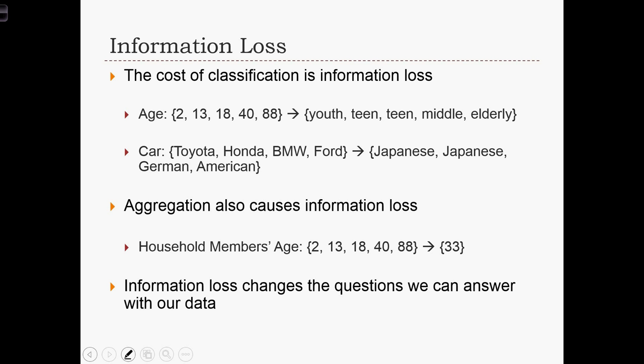When we classify our data, we are going to lose some information. For example, if our original data set consists of a sample of five people and their ages — 2, 13, 18, 40, and 88 — and we classify them by life cycle: under 13 as youth, 13 to 19 as teen, 20 to 55 as middle-aged, and over 55 as elderly, then the 2 becomes a youth, 13 and 18 both become teens, 40 is middle-aged, and 88 becomes elderly.